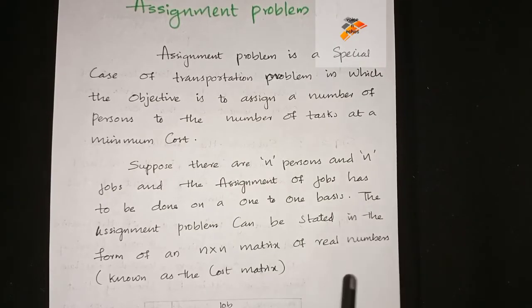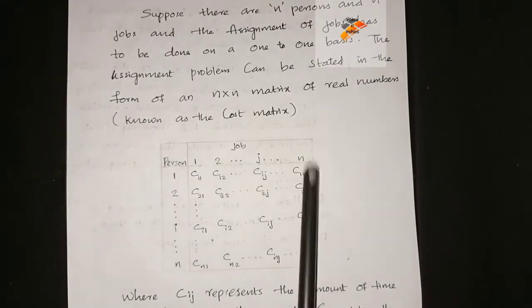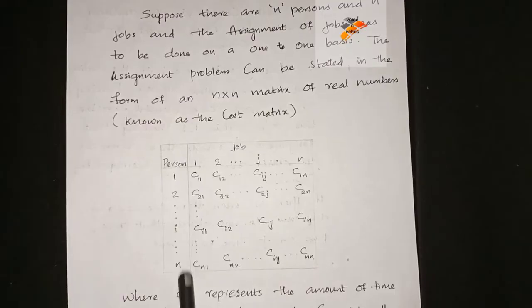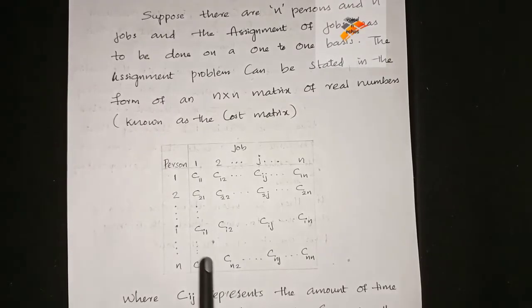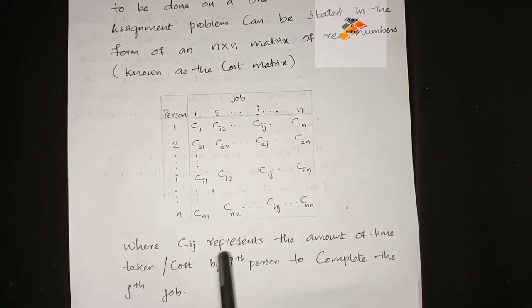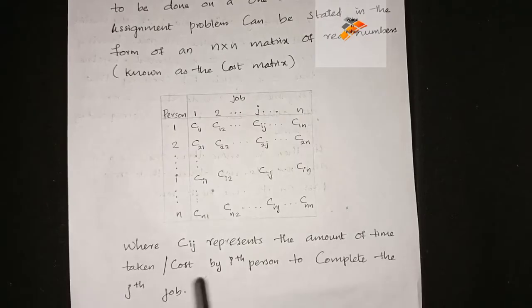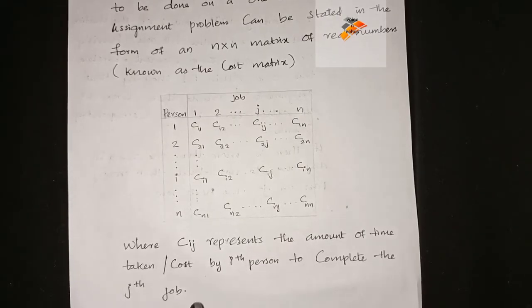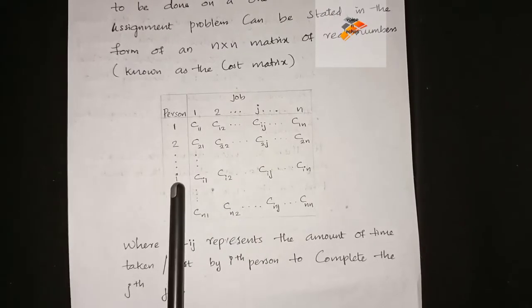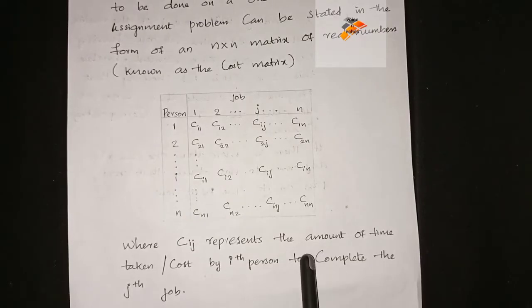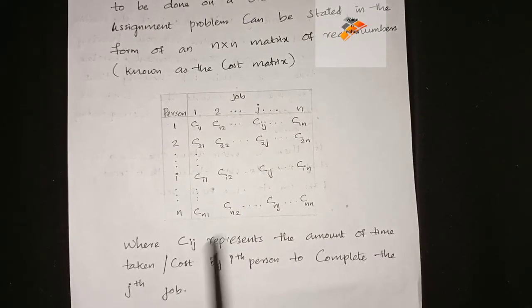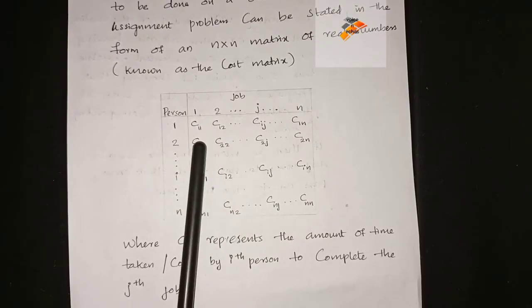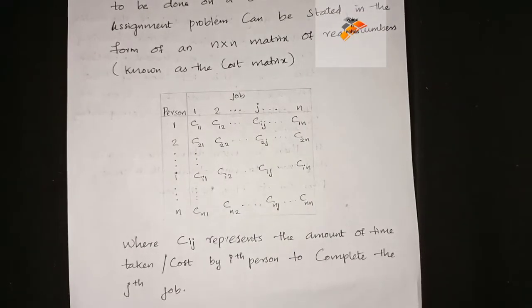The element of the matrix represents the amount of time taken or cost by the i-th person to complete the j-th job. So C_ij represents the cost or time for person i to complete job j.